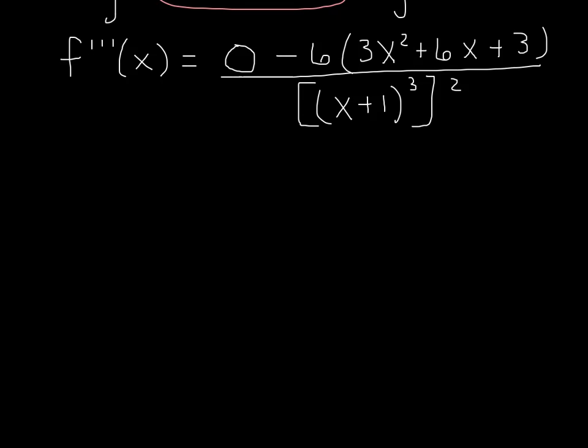Okay, so working on cleaning up this mess. In the numerator, we've got negative 6. 0 minus 6 is negative 6 times. And I see a common factor of 3. So I'm going to take out that 3, and that leaves x squared plus 2x plus 1, which ought to look a little familiar.